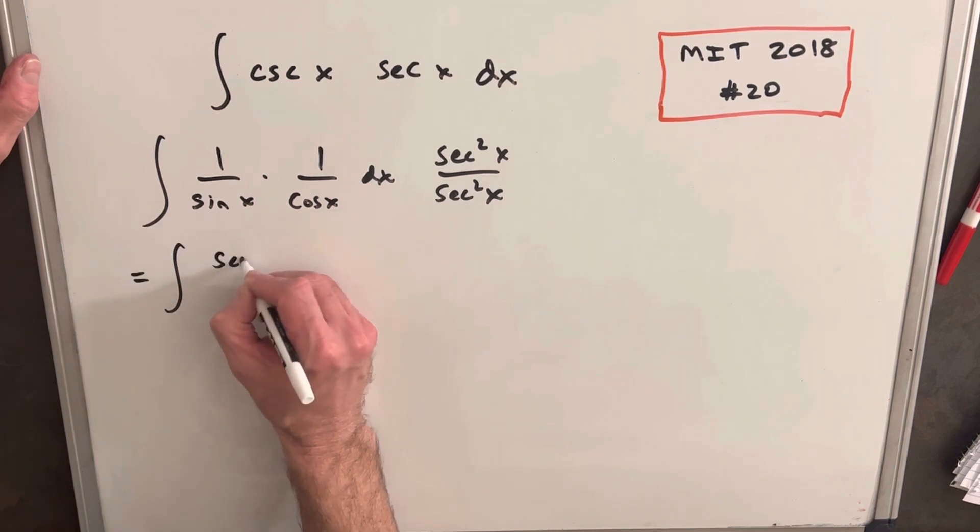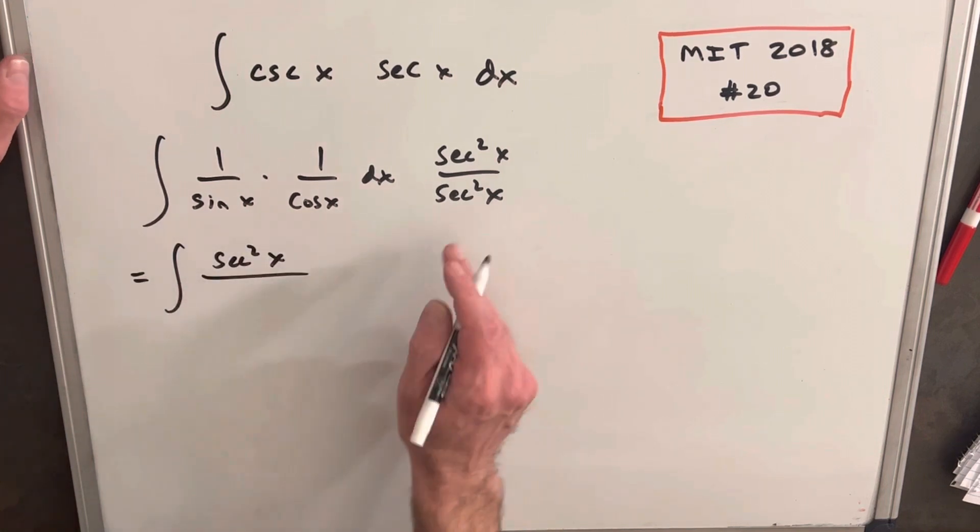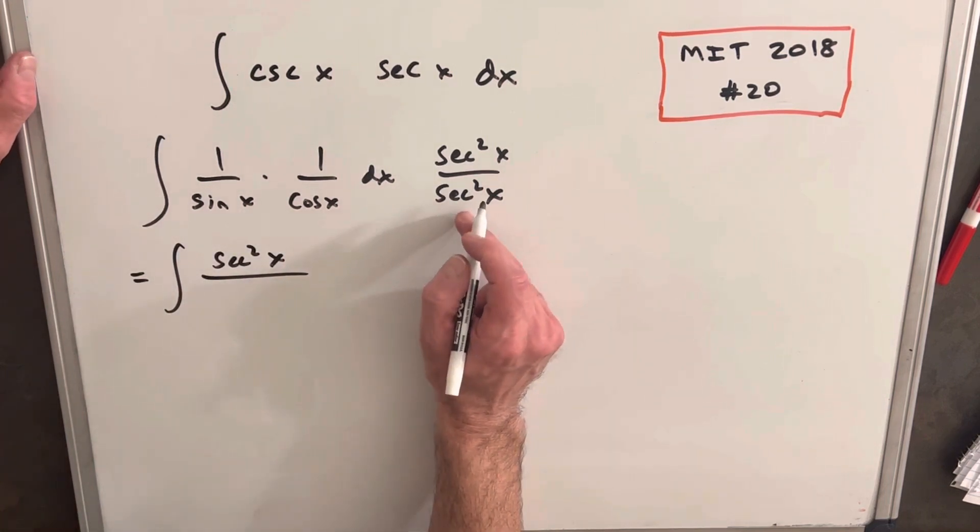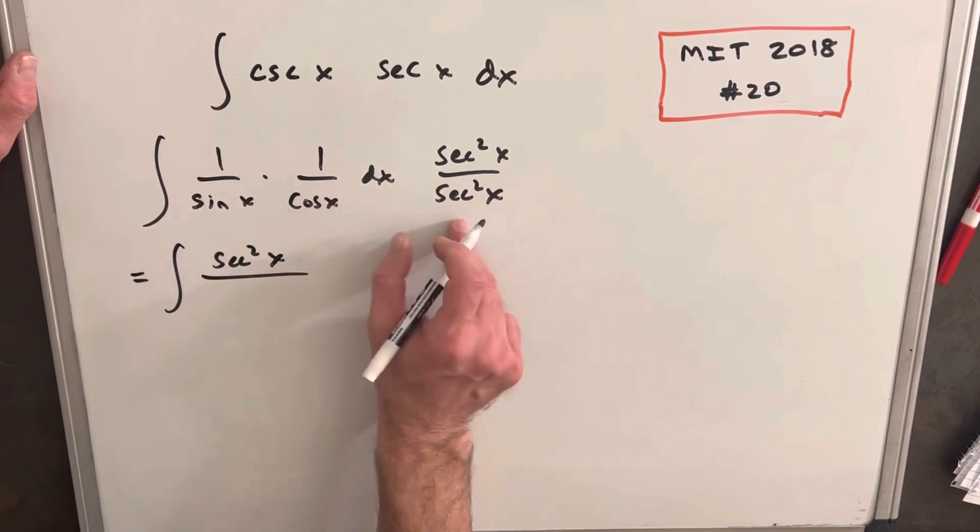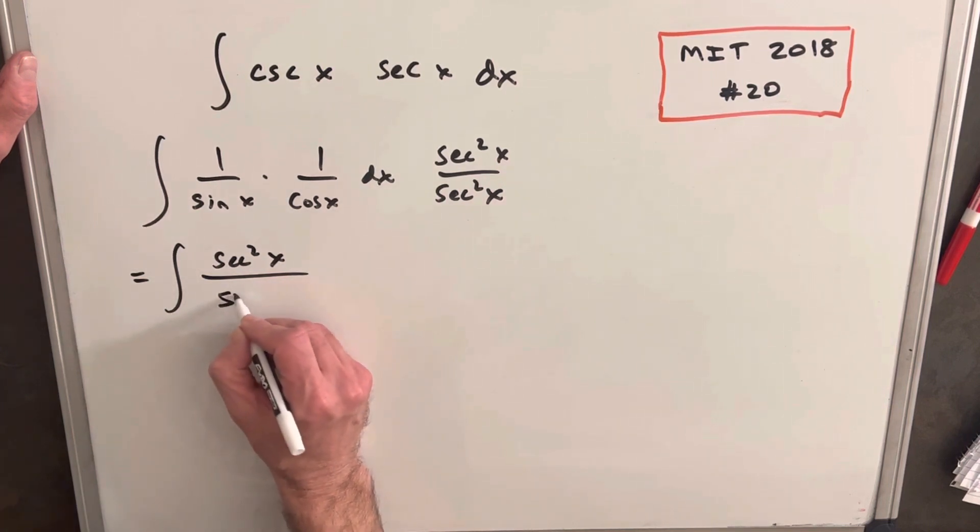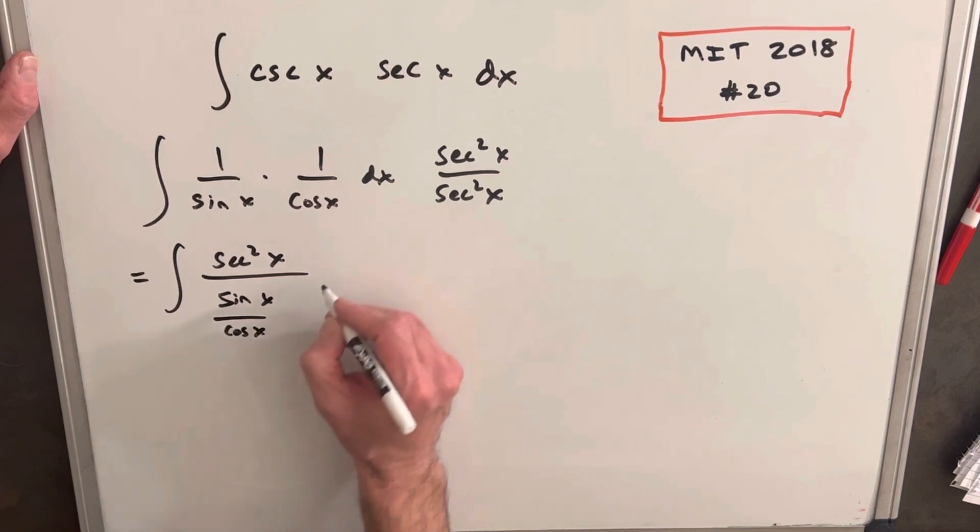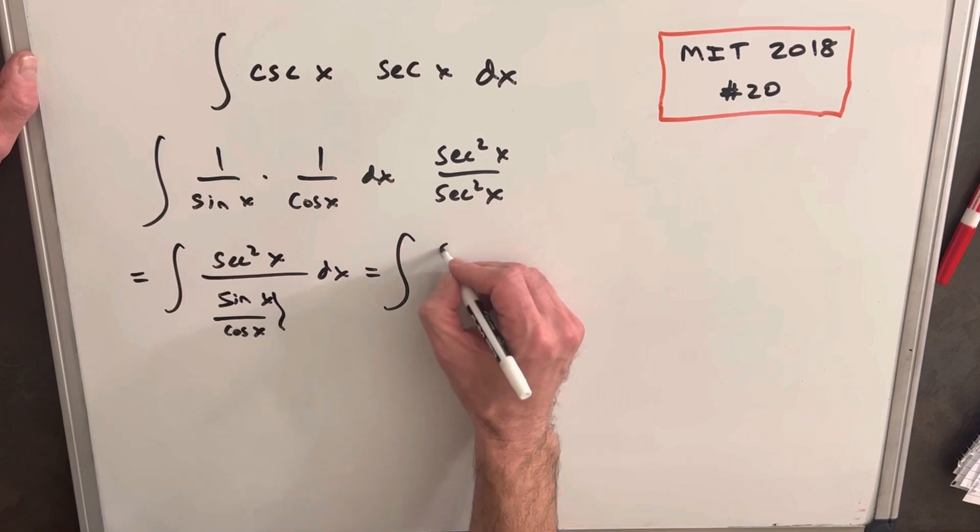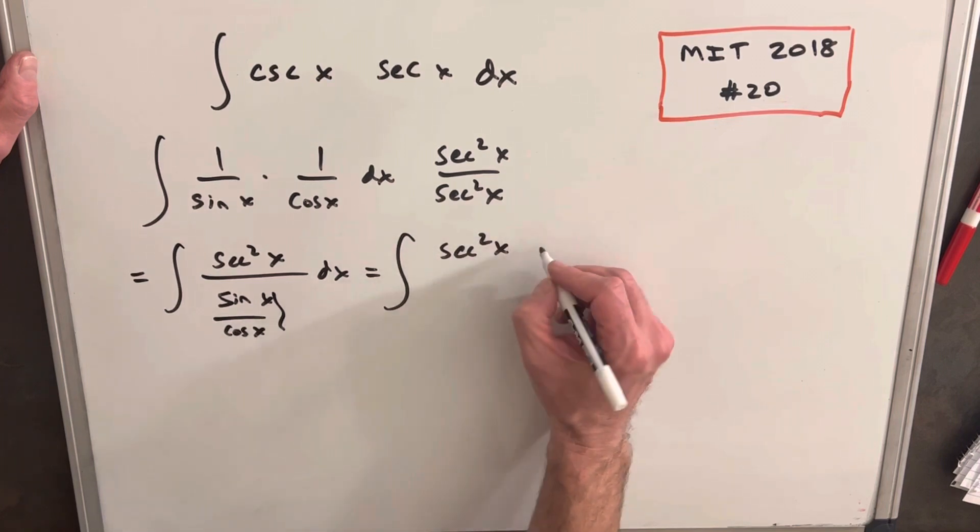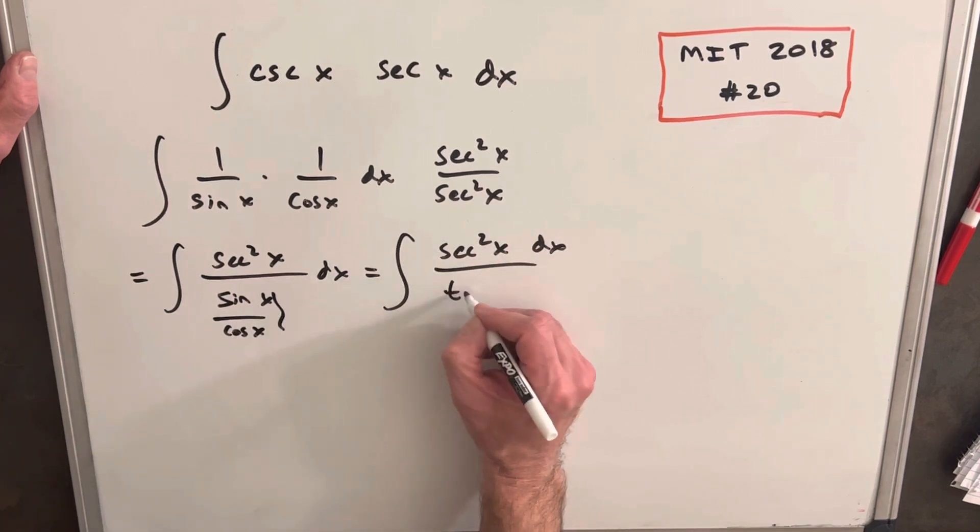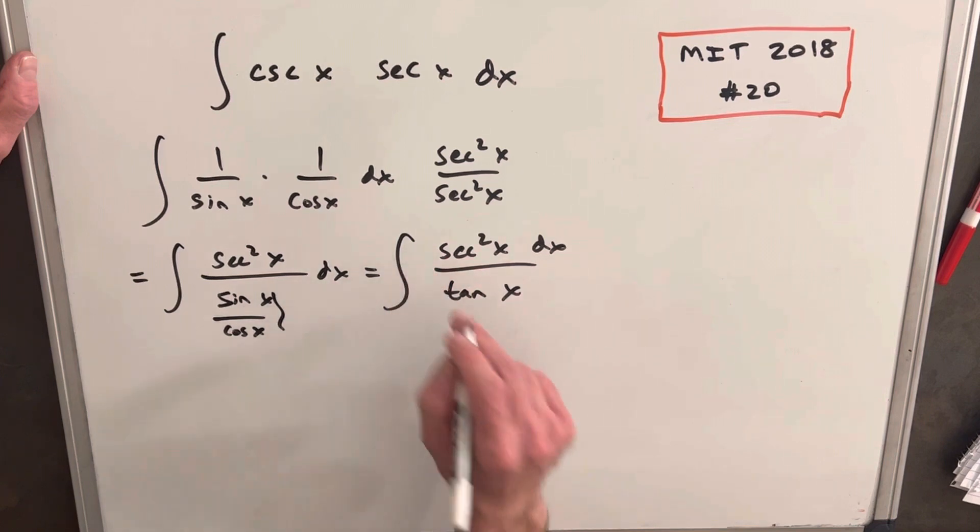So then we'll have in the numerator a secant squared. In the denominator, secant is 1 over cosine. So 1 of the cosines is going to cancel, and we just have sine over cosine in the denominator. But that's the same thing as tangent. And then the beautiful thing about that is that the derivative of tangent is actually secant squared.